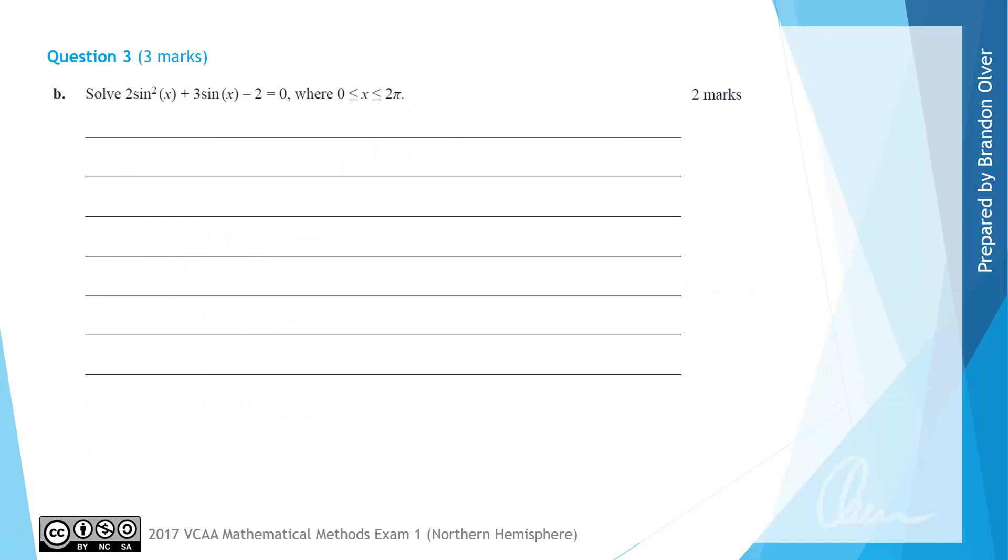For part B of this question, we're asked to solve 2sin²(x) + 3sin(x) - 2 = 0, where x is between 0 and 2π included. So we can recognize that there's a power of 2 on sin(x), regular sin(x), and a constant term. So that gives us a hint towards this being a hidden quadratic. So to reveal it, we're going to let the variable capital A equal sin(x).